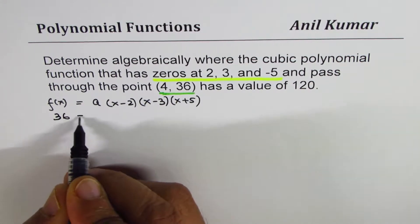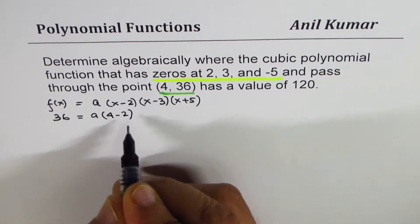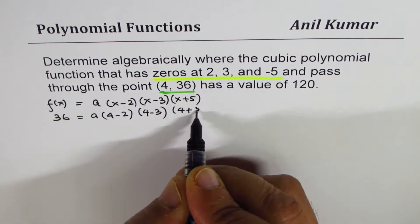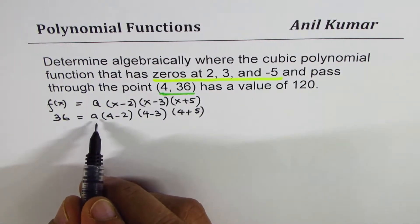So we can write this 36 here, and replace x with 4. So (4 - 2) times (4 - 3) times (4 + 5), right? So replacing all x with 4. This helps to find the value of A.